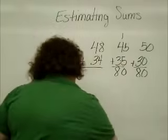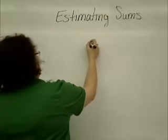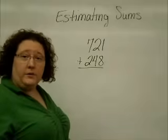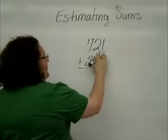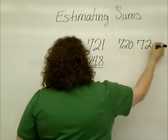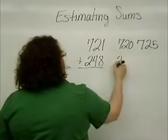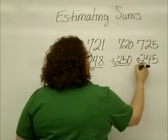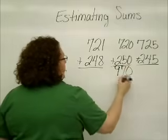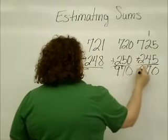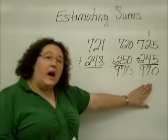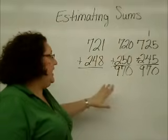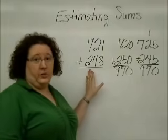Let's take a look at one that runs up to the hundreds, using problem number 8 from our workbook. We find two compatible numbers for each number in the problem. For 721, we can use 720 or 725. For 248, we could use 250 on the higher end or 245 on the lower end. Then it's just a matter of adding these numbers together. We may not always end up with the same answer from each pair, but when they differ, we compare the estimated numbers to the actual numbers in the problem to decide which is closer to what the actual answer would be.